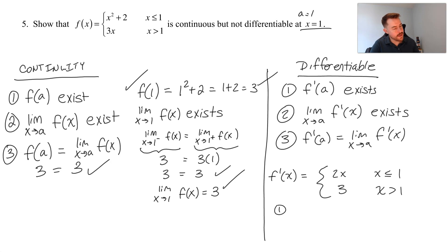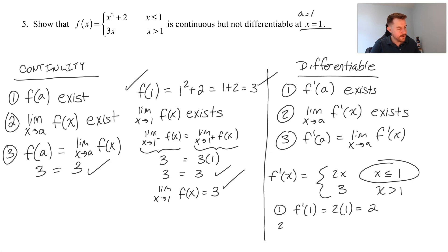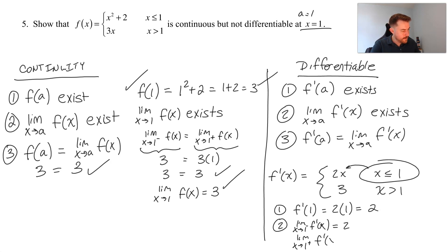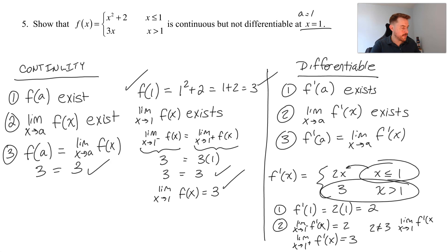Let's show that f prime of a exists. At x equals one, using the top piece since one is less than or equal to one, the derivative is two times one, which is two. Next, the left-hand limit of the derivative as x approaches one is two. But the right-hand limit as x approaches one from the right is three. Since two does not equal three, the limit as x approaches one of our derivative does not exist.